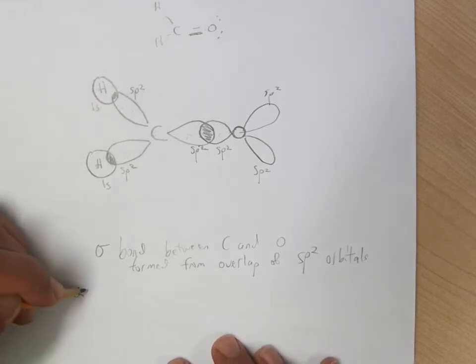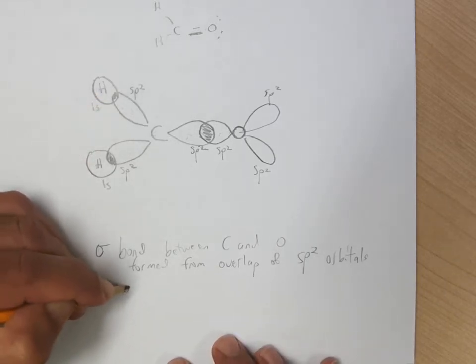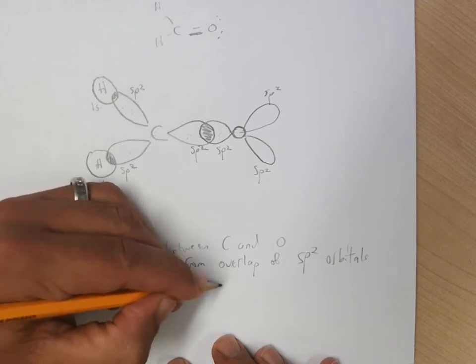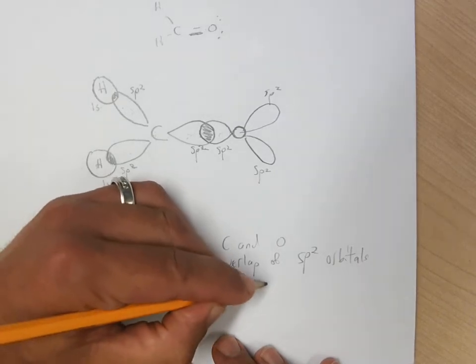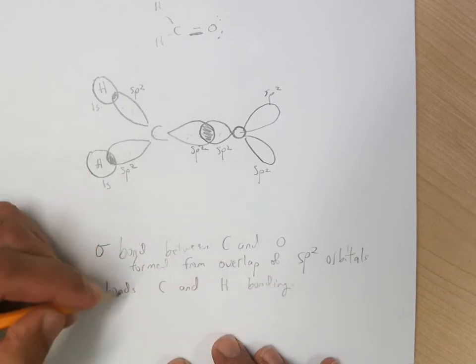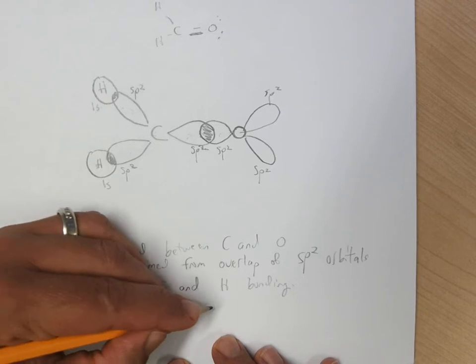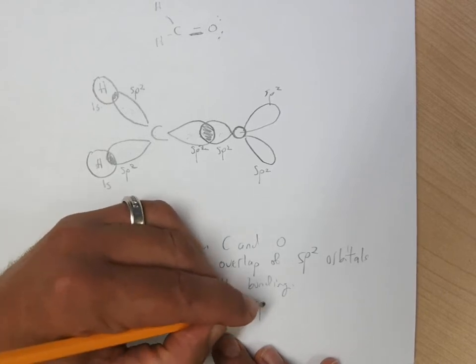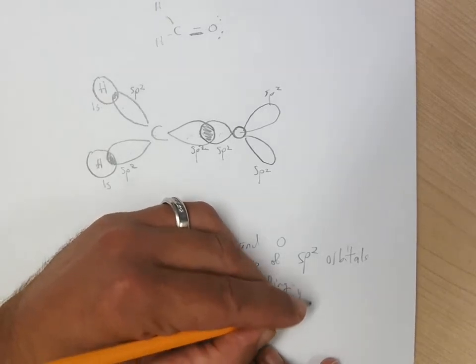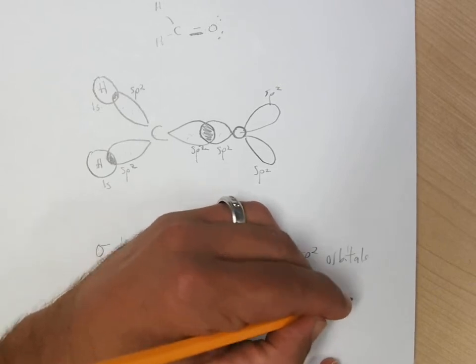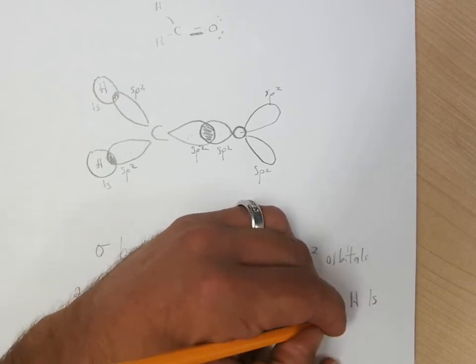Hydrogen's 1s orbital interacts with the SP2. So now we have two sigma bonds, carbon and hydrogen bonding, from the overlap of a carbon SP2 orbital with the hydrogen 1s orbital.